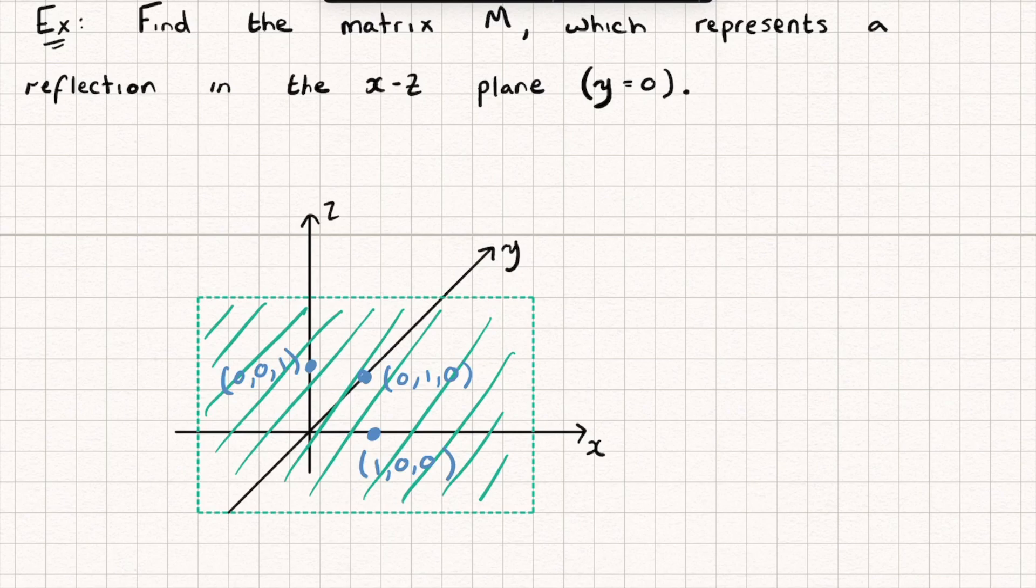Well the point (1,0,0), that's on the plane so that's going to remain fixed. So my matrix M will have a first column of (1,0,0). The point (0,1,0), that's going to be reflected in the plane and end up over here. Hopefully you can kind of see that. So that's going to be moved to the point (0,-1,0). So that's my second column.